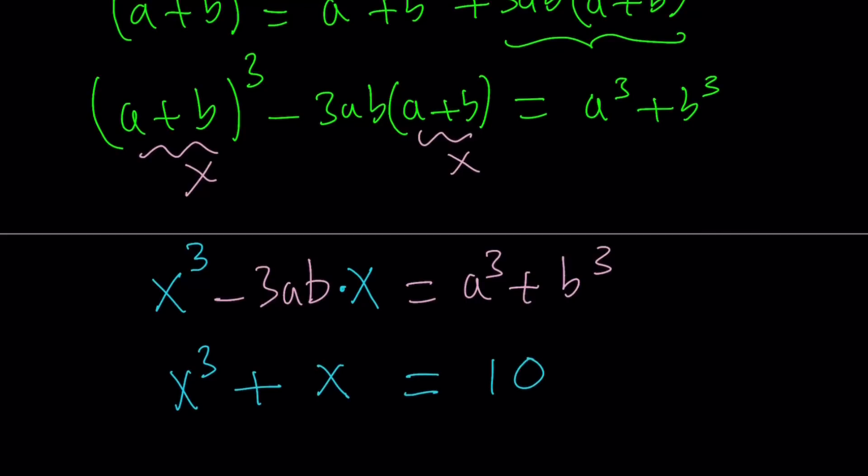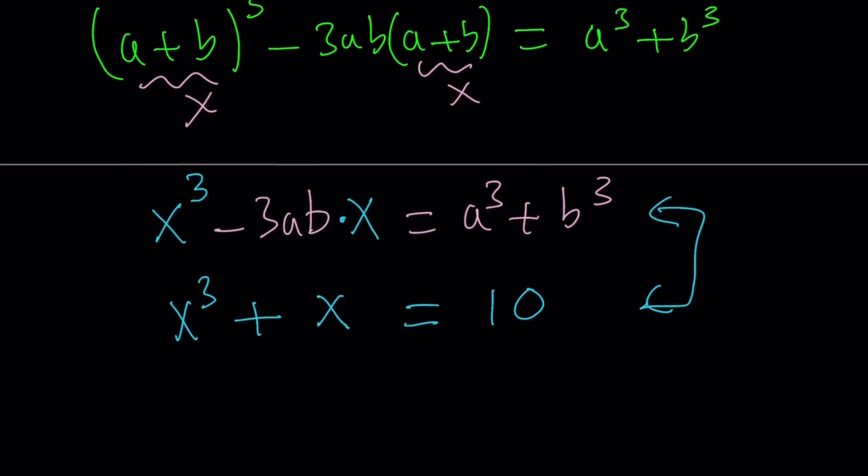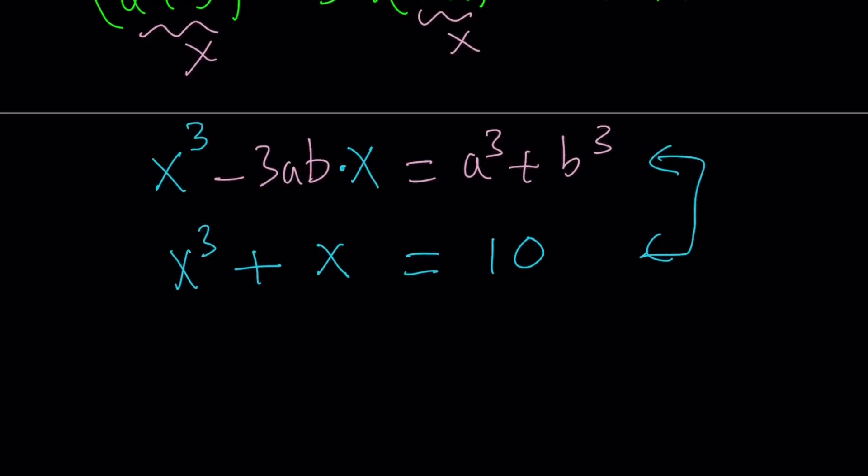And it's that one: x³ + x - 10 = 0. Let's go ahead and add 10 to both sides and write it in this format. And notice that these equations are very similar.